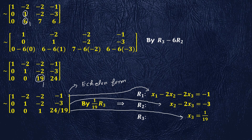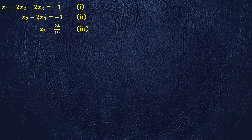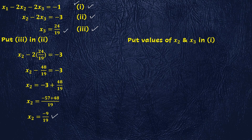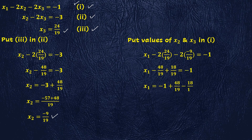Now we shall apply the process of back substitution to get the values of x2 and x1. We label these as equation 1, equation 2, and equation 3. We first put equation 3 into equation 2 and get the value of x2. After performing arithmetic operations, we get the value of x2 to be minus 99 over 19. Now we put the values of x2 and x3 into equation 1 to find the value of x1. After performing arithmetic operations, we get the value of x1 to be 11 over 19.